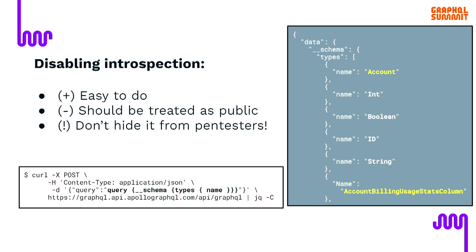It might be hard to prevent version leakage — sometimes software just provides an easy toggle, but often that's not the case. Important to note is that this is not the only way to do fingerprinting. Sophisticated attackers will always find a way to understand exactly what system you're using, just because GraphQL right now is very fragmented. Although there is a specification, most software implements various optional features, so as an attacker you can just test for them specifically.